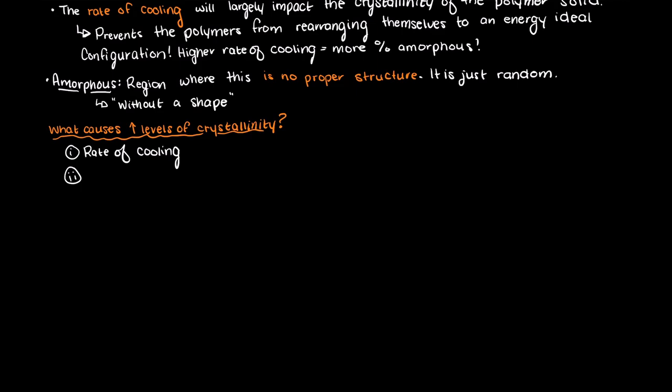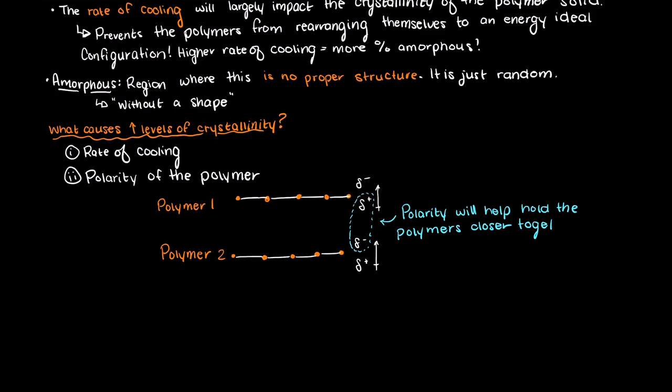Firstly, we have the polarity of the polymer. Polar molecules are attracted to one another, and therefore it makes sense that this will lead to a higher level of crystallinity, as the molecules from the same or another polymer chain can better bind and compress themselves into a crystalline formation.